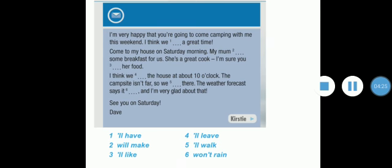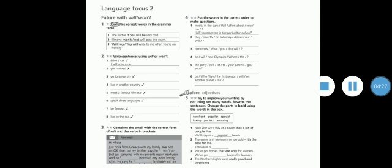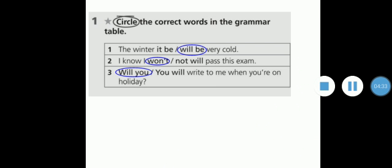Now let us move to the exercises that we have in the workbook. Question number one: circle the correct words in the grammar table. Number one: the weather will be very cold. Of course will be. We put will, then the verb in the infinitive case. Number two: I know I won't pass this exam. Number three: will you write to me when you're on holiday? Here we have a question, so we start with will, then the subject, not you will, because you will here is an affirmative sentence, not a question.